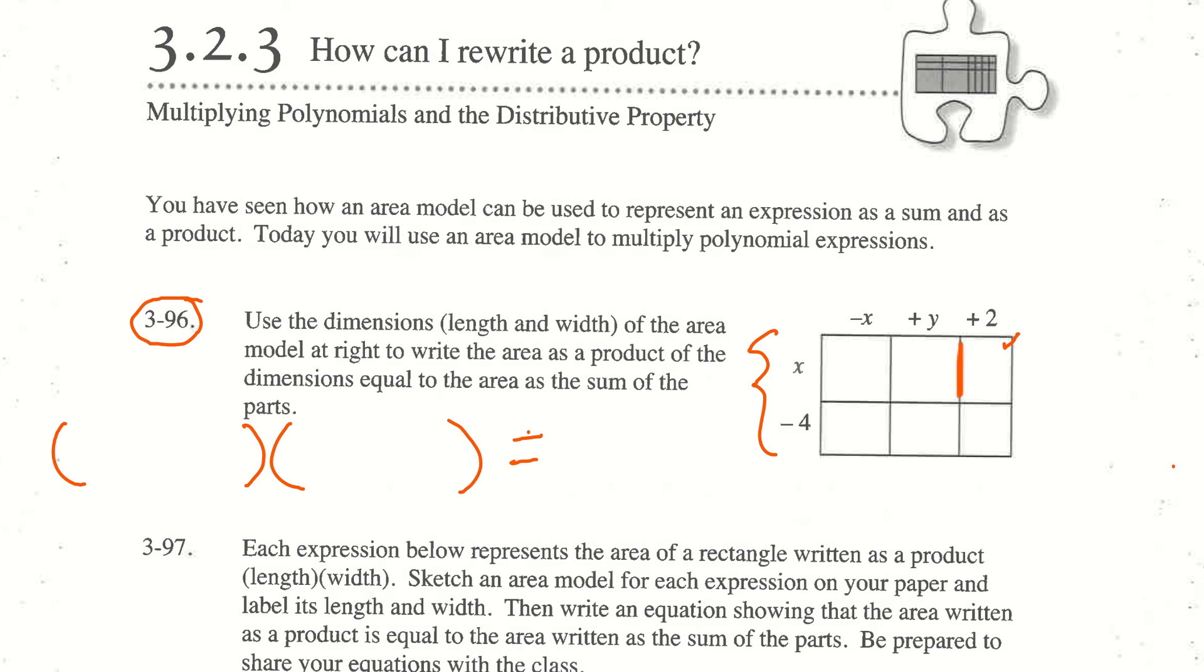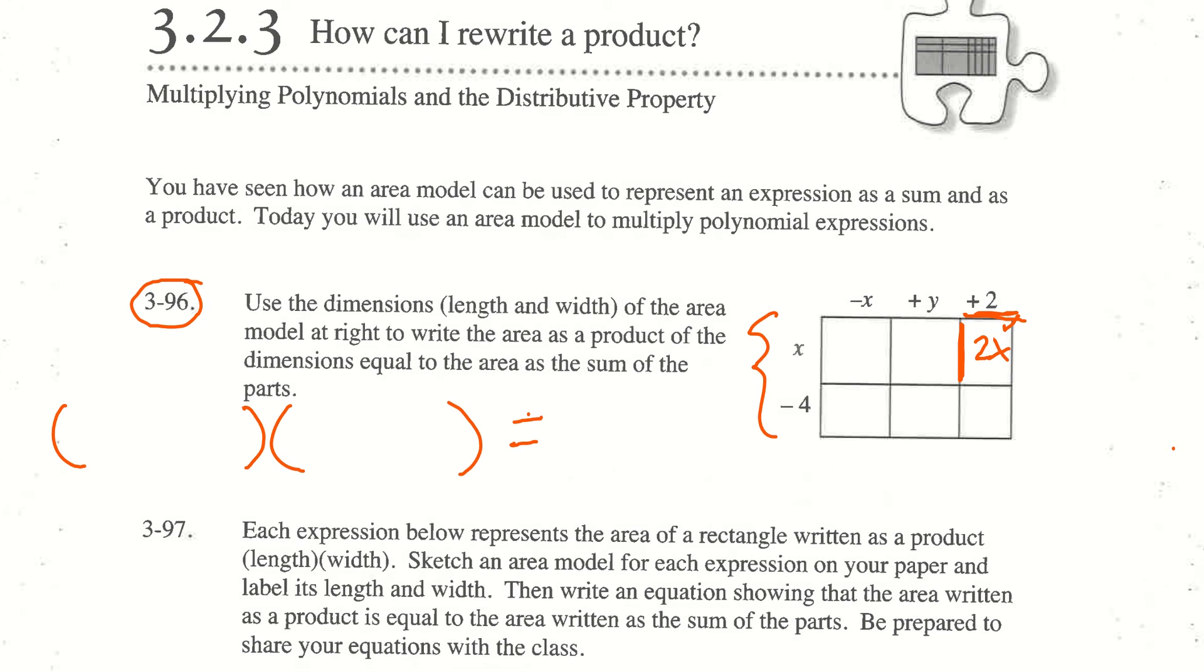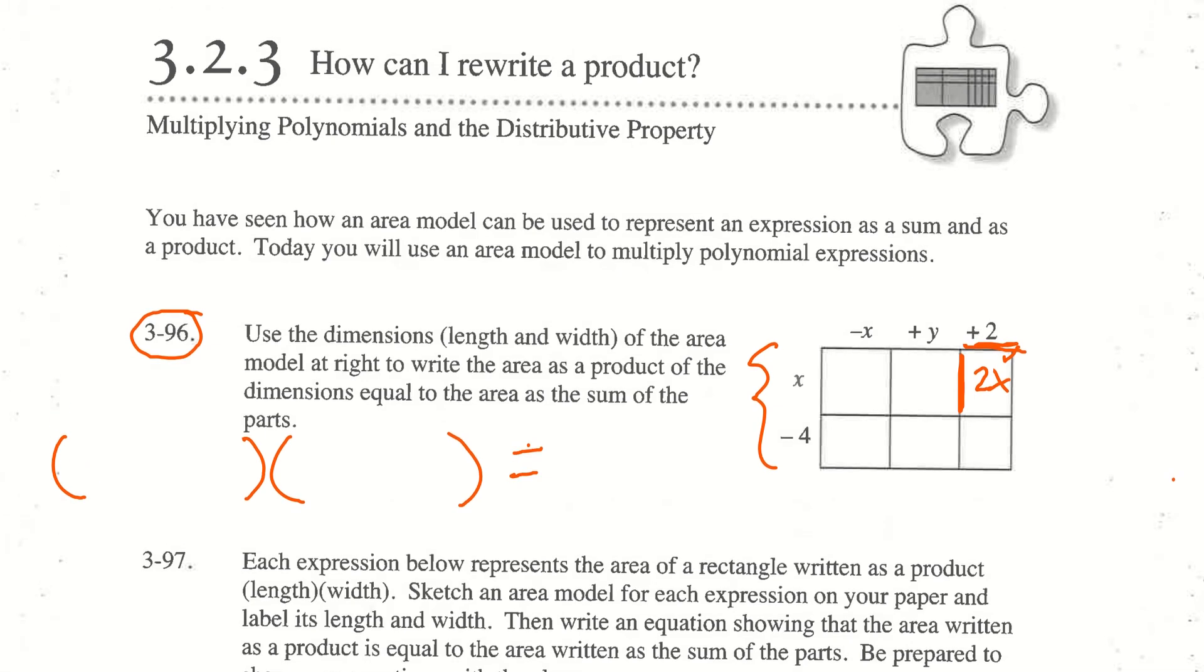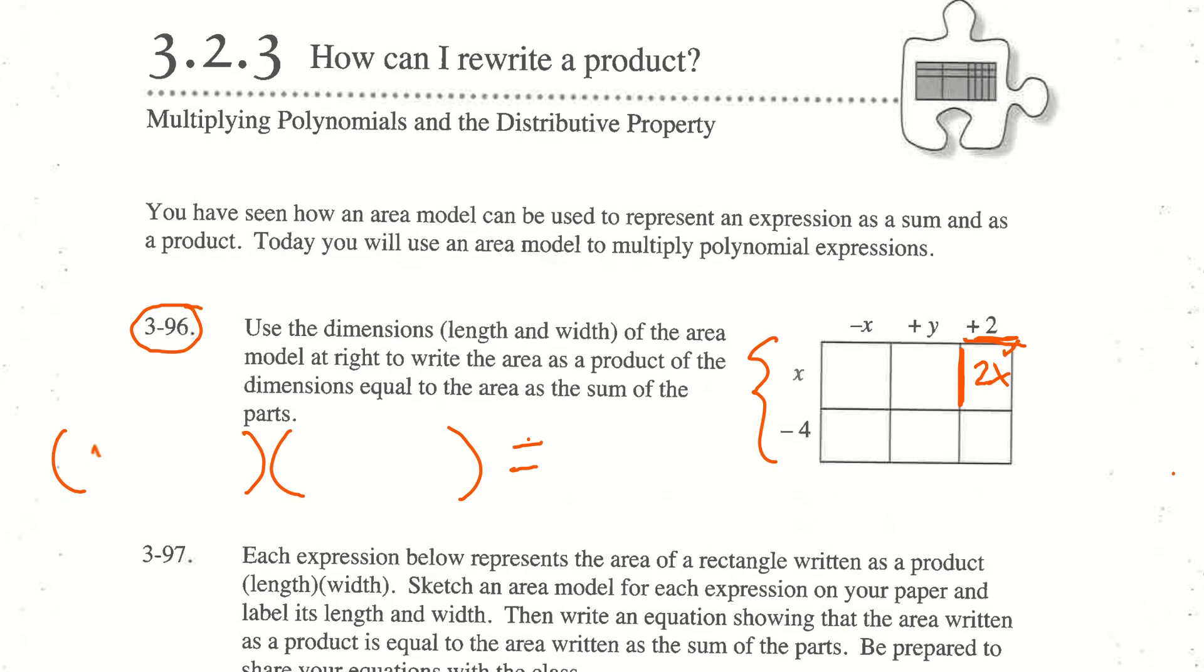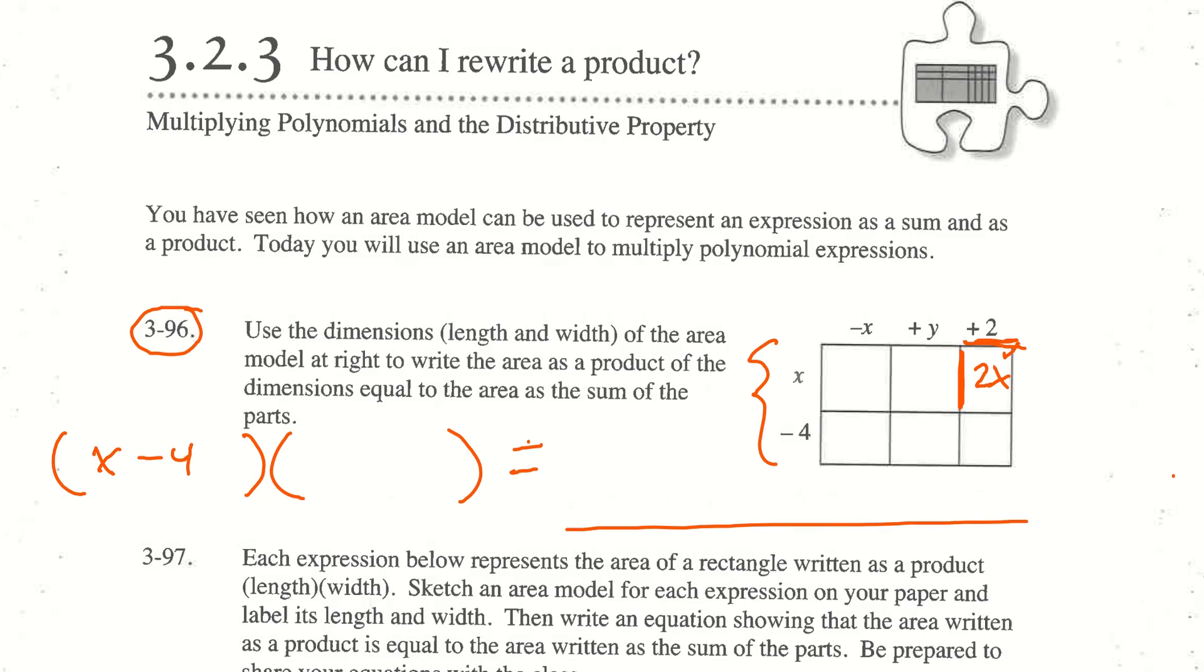I can see off to the side that this is x, so this is an x here times a 2, so this is 2x. We're just multiplying length times width to get the area that goes inside. So it would be x minus 4 times something equals the sum of the parts. When you write the sum of the parts, make sure you simplify that expression as much as possible.